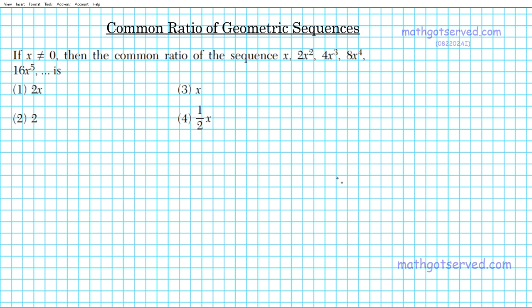The question reads: if x is not equal to zero, then the common ratio of the sequence x, 2x squared, 4x to the third, 8x to the fourth, 16x to the fifth, is what?